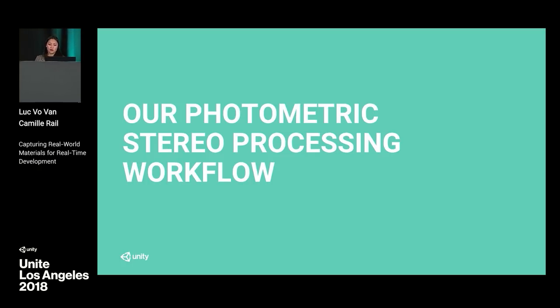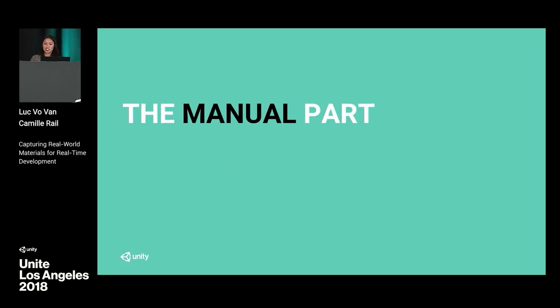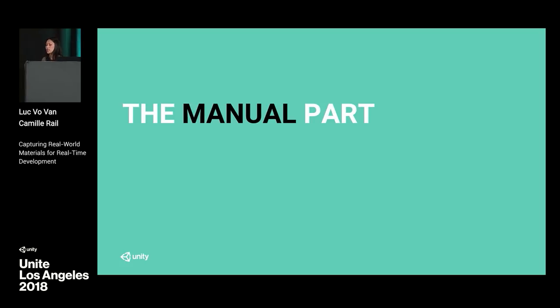We'll take you through our photometric stereo processing workflow and show you each step so you can have a better understanding of how photometry works in general. This presentation will be split into two parts: the manual part — the photo capturing, everything you do with the camera manually — and the digital part — everything at the computer: processing, correcting, and integration.